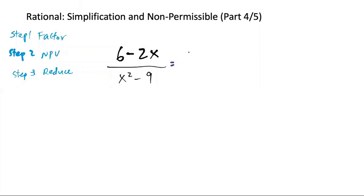So the first one is easy, we can just take out 2, 3 minus x. And then for the bottom, it's just difference of squares, x minus 3 and x plus 3.